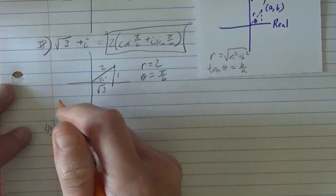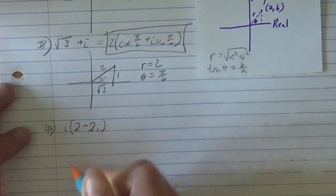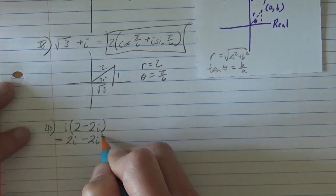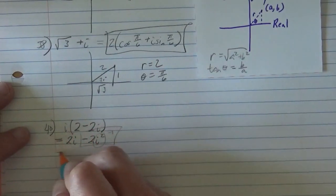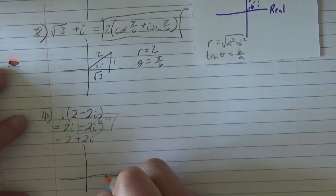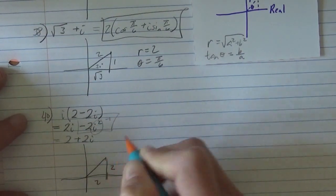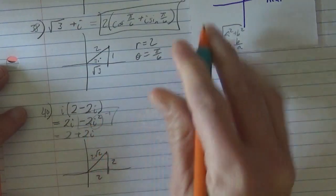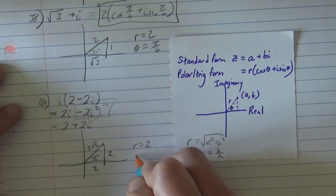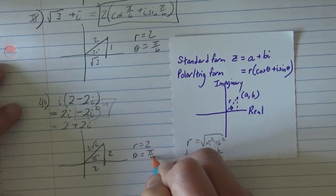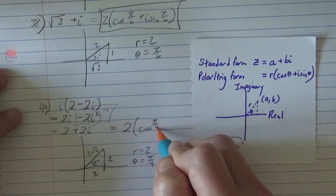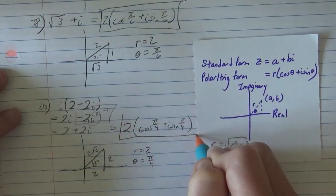We keep going. i times 2 minus 2i. I don't know why they do this to us. This is 2i minus 2i squared. i squared we know is negative 1. So this is basically a positive 2, 2 plus 2i. So it's 2 plus 2i. And so, 2 on the real, 2 on the imaginary, and 2, 2, 2 root 2. Again, you could do Pythagorean theorem if you wanted. But we recognize this as a 45, 45, 90, with the radius equal to 2 root 2. And then the angle, the equivalent of 45 degrees is pi fourths. So this should be the same thing as 2 root 2 cosine pi fourths plus i sine pi fourths.